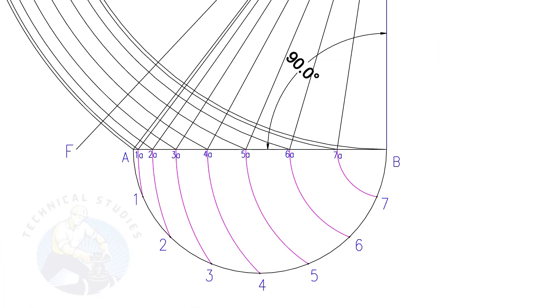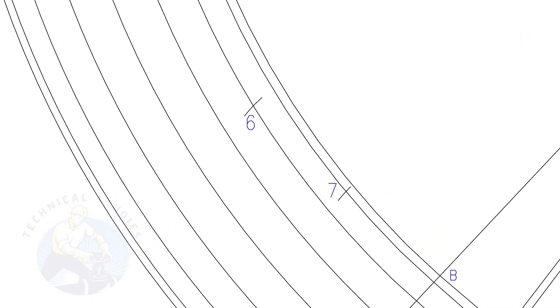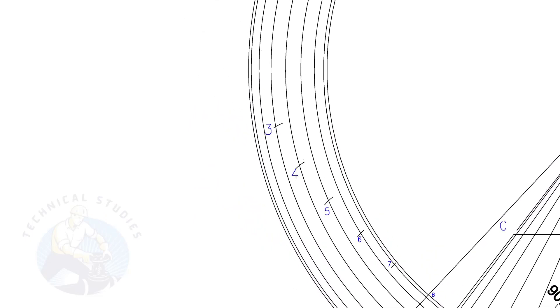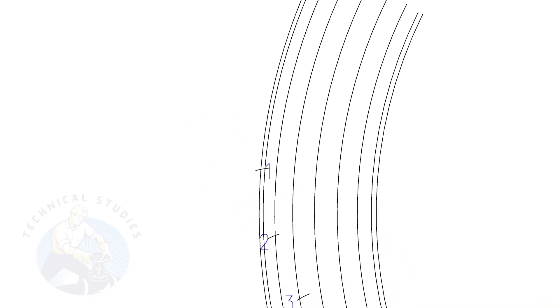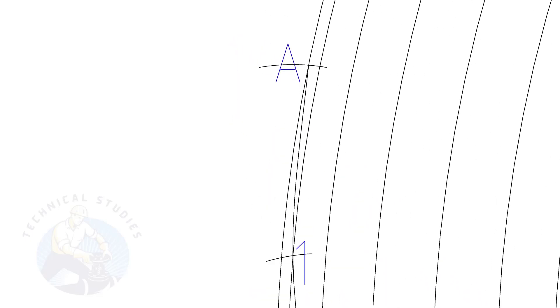Starting from the FE line, draw arcs of 125.68 mm as shown. If it is difficult to maintain 125.68 mm on the divider, you can draw one arc at 125 and the next at 126, etc. But be careful — the final arc shall be within a limit of plus or minus 3 mm.